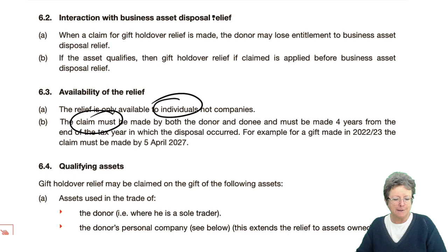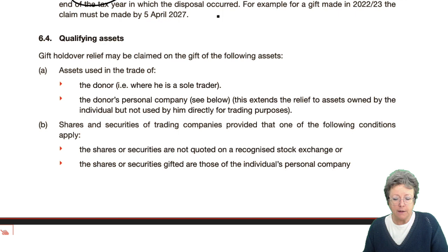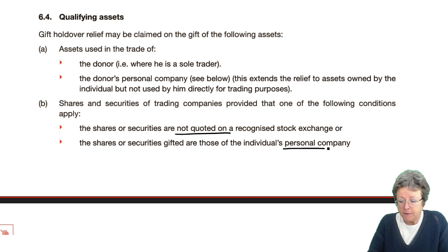There are some qualifying assets for gift relief. You can claim gift relief on assets used in the trade of the donor — if he's a sole trader or their personal company. This extends relief to assets owned by the individual but not used by him directly. For shares, they must be unquoted, and it must be their personal company.